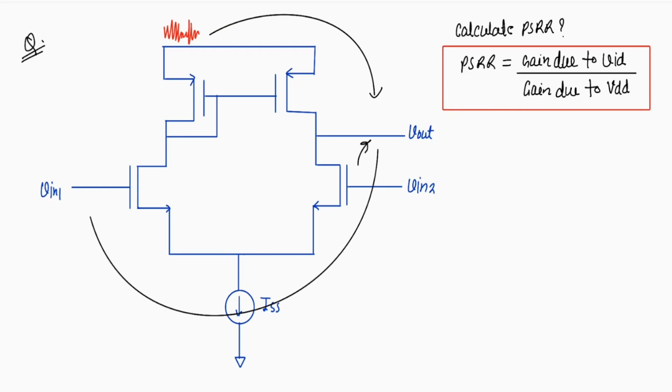Before we calculate power supply rejection ratio, we will see how this diode connected device will behave in the circuit. This is important to see how a diode connected behaves individually or if you place this in any other circuit. So first we will analyze this circuit.